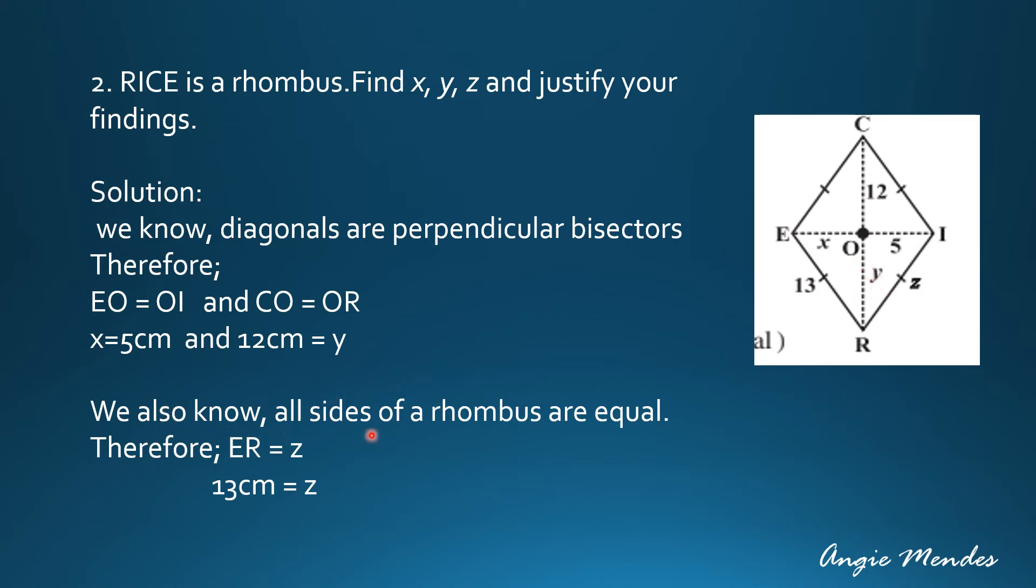Now we also know that the sides of a rhombus are equal. So if ER is equal to 13 cm, then Z will also be equal to 13 cm. So here we have used two properties: the diagonals are perpendicular bisectors of each other and the sides of a rhombus are equal.